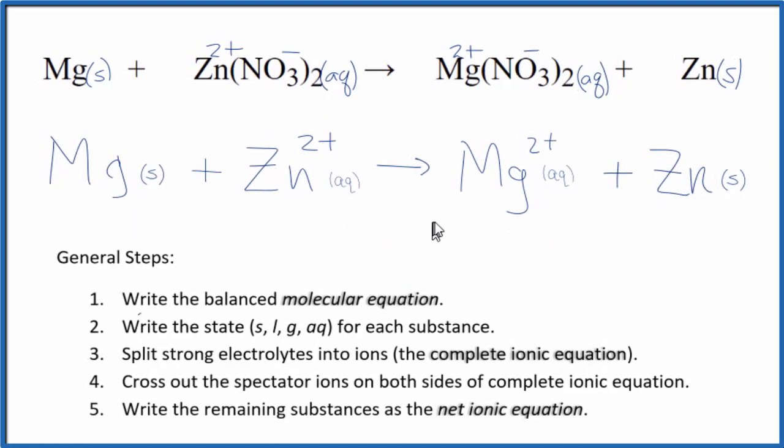So this is our balanced net ionic equation for Mg plus Zn(NO3)2. You'll notice that charge is conserved. On this side, we have 2 plus, on this side, total charge of 2 plus. And we have Mg atom on both sides, Zn on both sides. So mass is conserved as well.